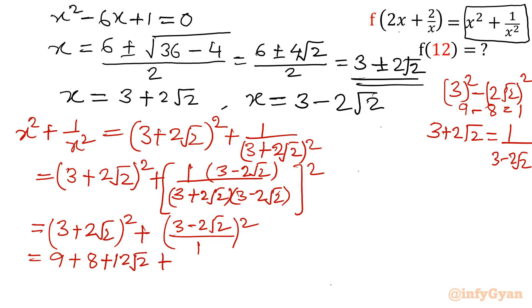Similarly, second bracket a², 9, b², 8, minus 2√2, so minus 12√2. You can see both terms will get cancelled out. 9 + 9 is 18, 17 plus 17, 34. So you can match your answer.